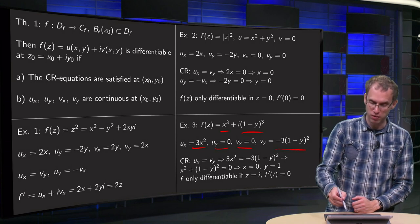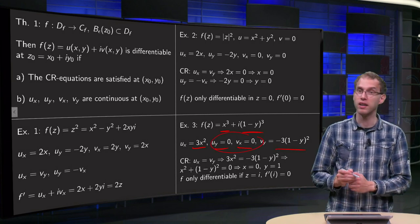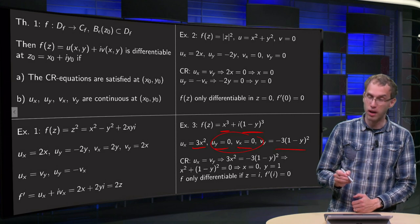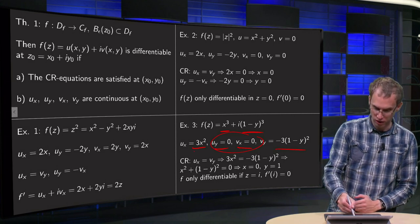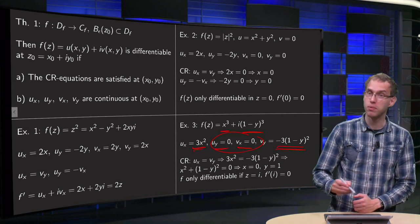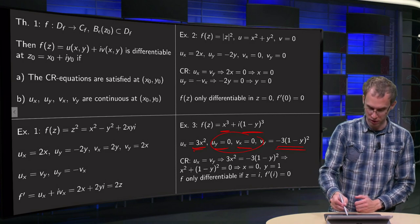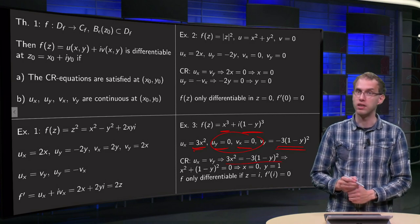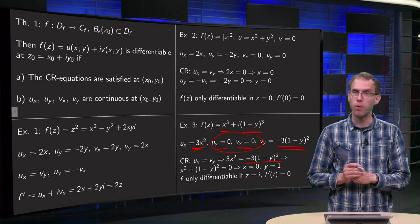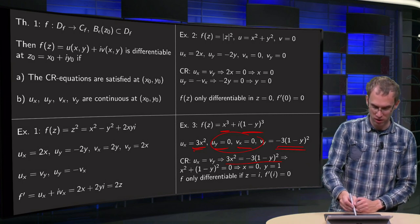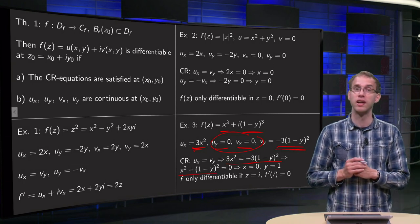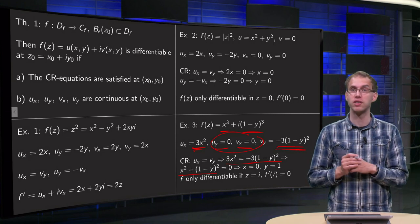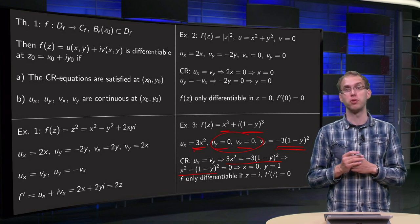Well, we have vx equals minus uy, so this part is fine. But we also need ux equals vy, so 3x squared equals minus 3(1 minus y) squared. Well, I can divide by 3 and bring the (1 minus y) squared to the left hand side and you find that you have to satisfy x squared plus (1 minus y) squared equals 0.